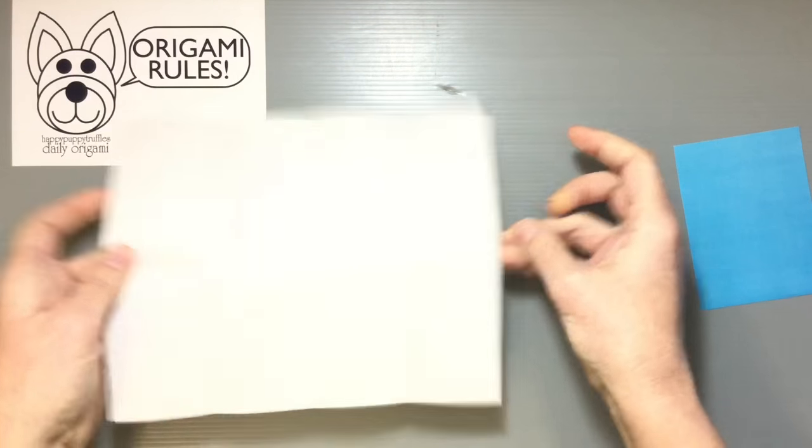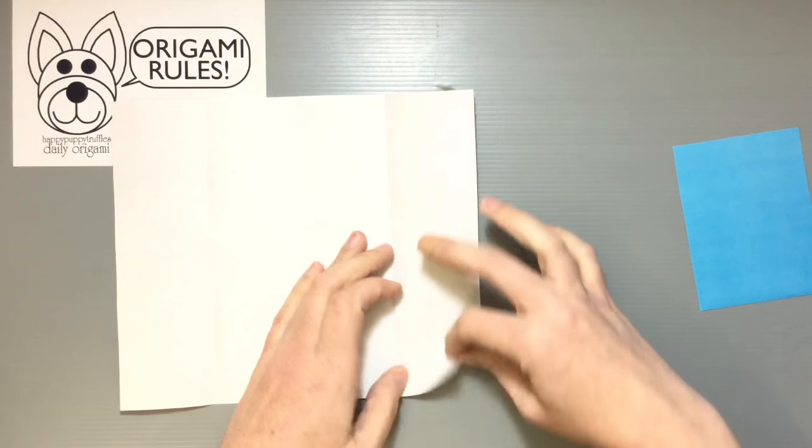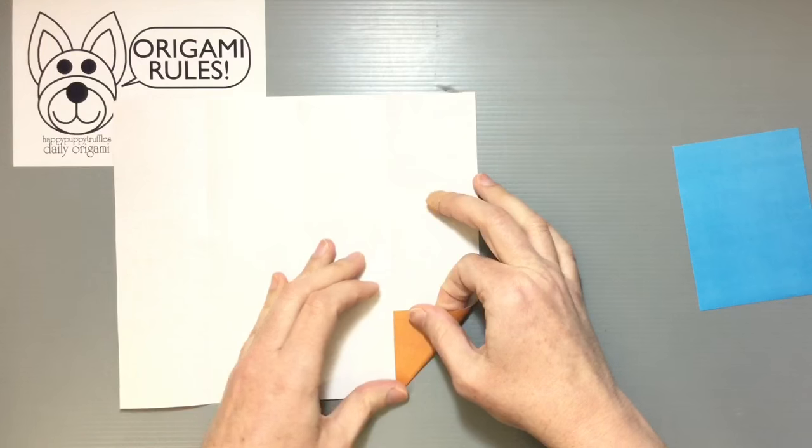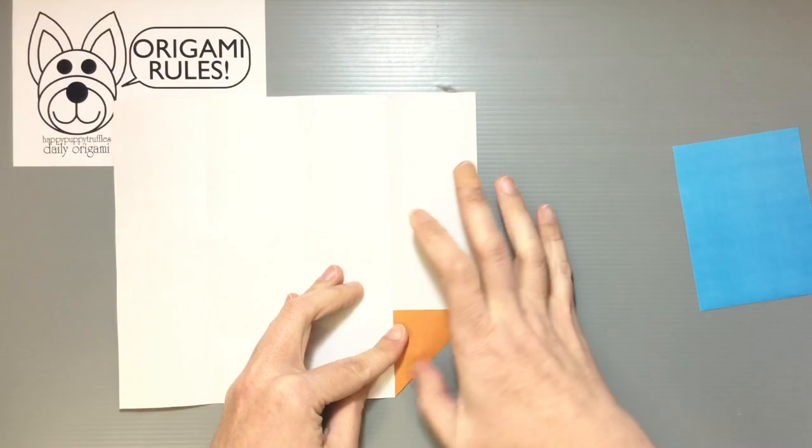We're just going to open everything up. And I'm going to take each of the four sides and fold towards that crease I just made to create this nice little triangle.